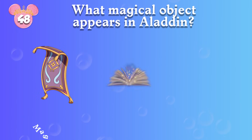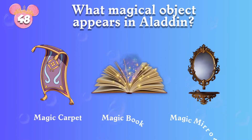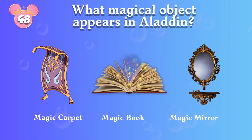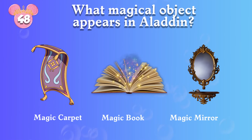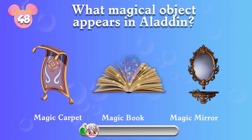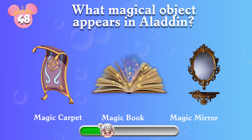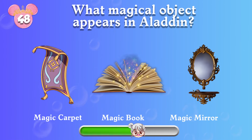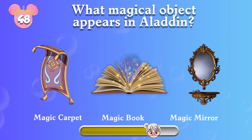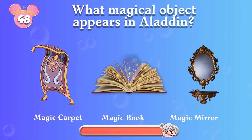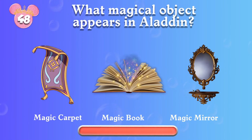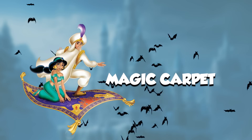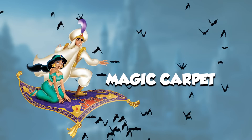Round 48: Which magical object appears in Aladdin? Magic carpet!